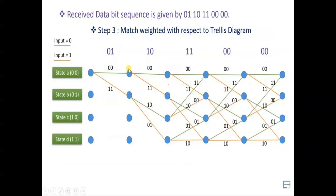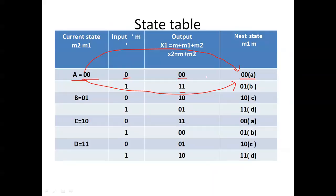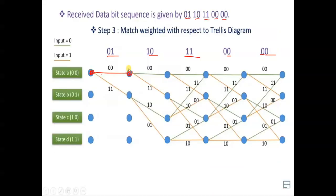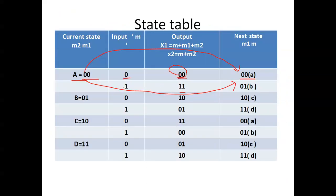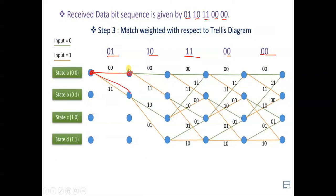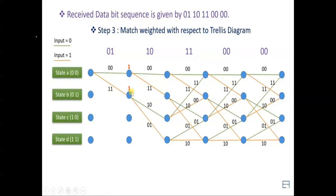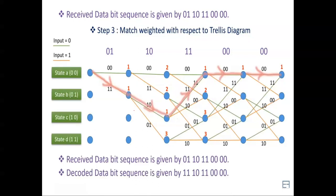For the Viterbi decoder, we split the received code word into two-bit groups — two bits per group because we have two registers — giving us partitions equal to the number of bits divided by two. Each partition connects two nodes. For example, present state 00 to next state 00 with output 00, and the next transition goes to state B with output 11. The weight is the number of differing bits between the transition output and the received word — here the difference is one bit, so the weight is one.